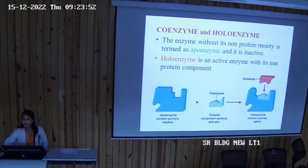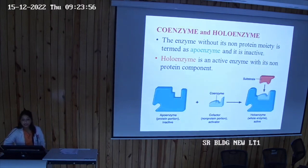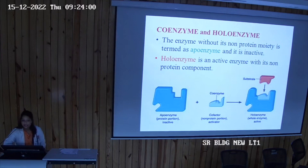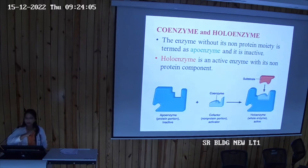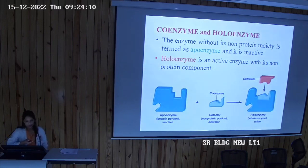An enzyme without its non-protein moiety is called an apoenzyme, and it is inactive. The holoenzyme is the complete, active enzyme — it includes the protein part (apoenzyme) plus its non-protein component.